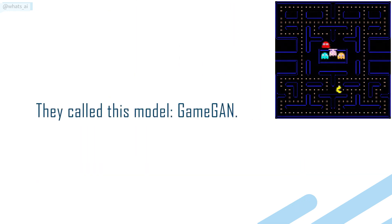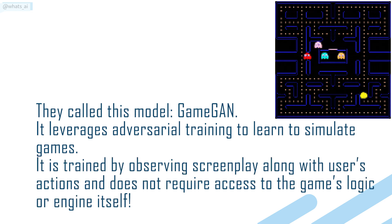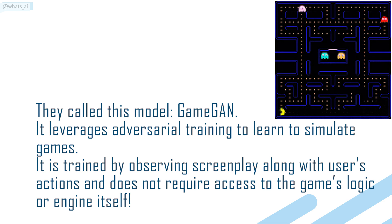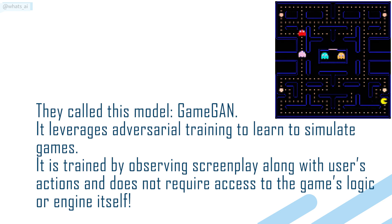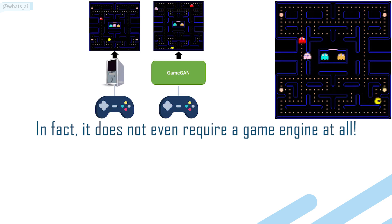They called this model GameGAN. It leverages adversarial training to learn to simulate games. It is trained by observing screenplay along with users' actions and does not require access to the game's logic or engine itself. In fact, it does not even require a game engine at all.